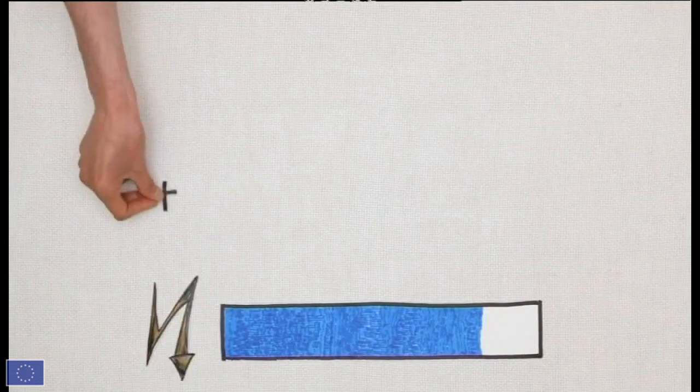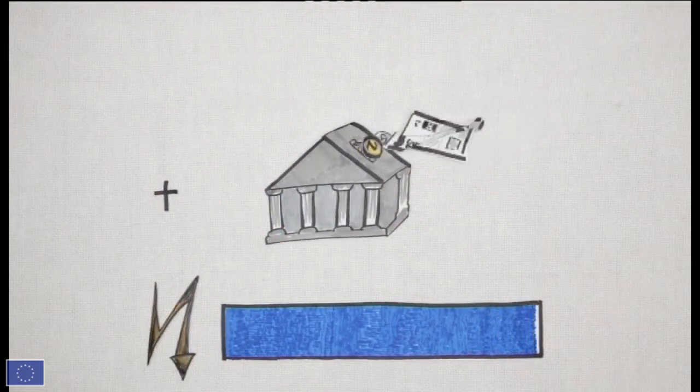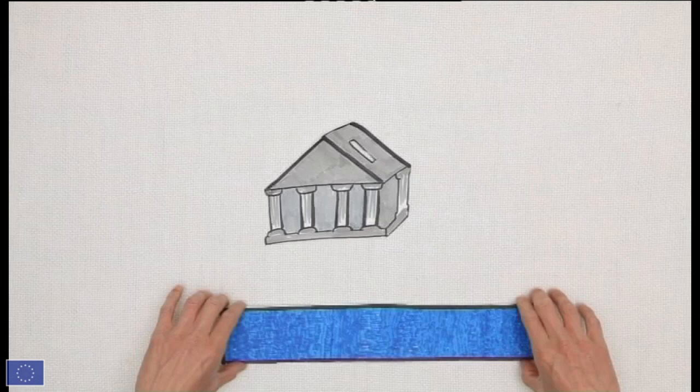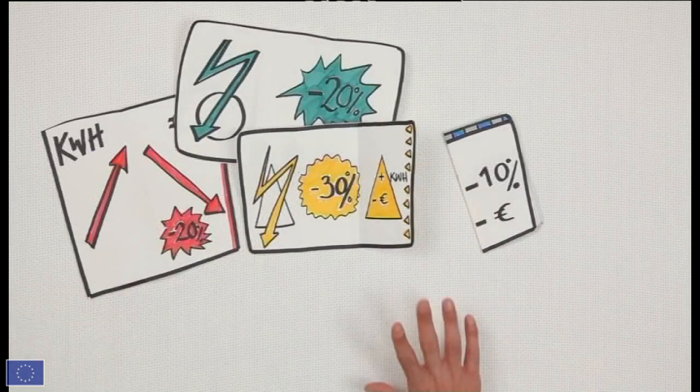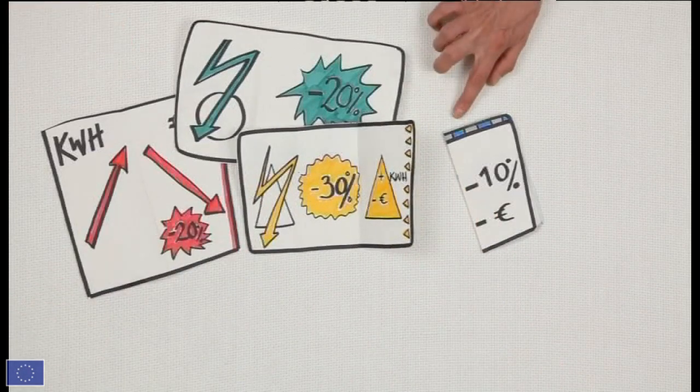Third and last are charges and taxes, which make up 10-30% of the price. Since the market has been opened up, you can influence the price of electricity and the amount of your bill by bringing competition between suppliers into play. So don't hesitate to compare offers.